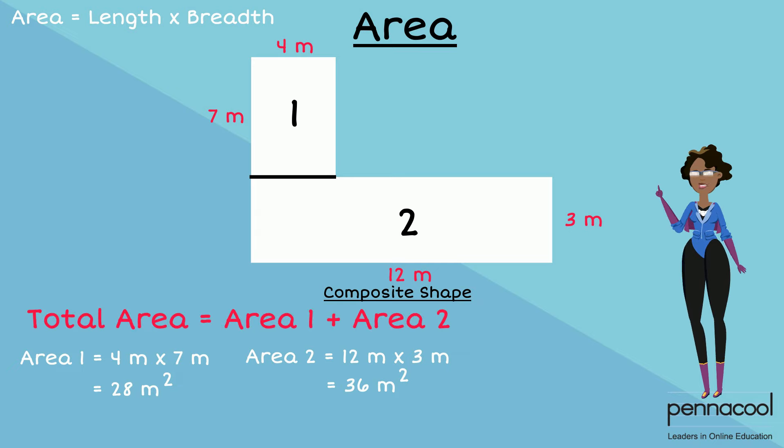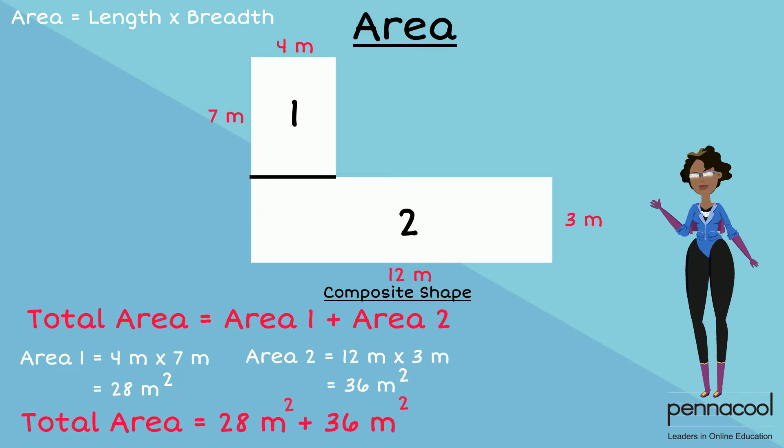The total area would be the sum of the two areas. Our total area is therefore 28 meters squared, added to 36 meters squared, giving a total of 64 meters squared.